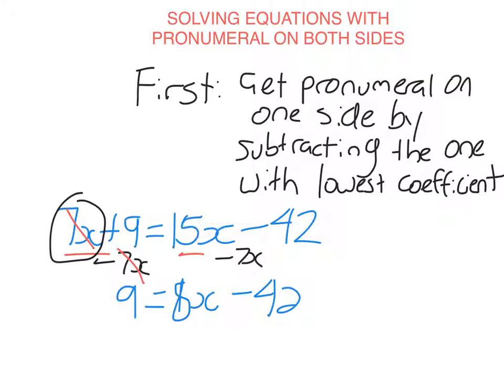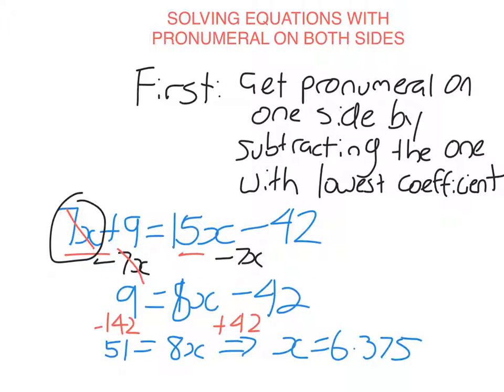Now this looks just like the equations we did in previous lessons. So you know the drill, I add 42 to both sides and I get 51 equals 8x. Then I divide each side by 8 and I get x equals 6.375 or 6 and 3 eighths. How simple was that?